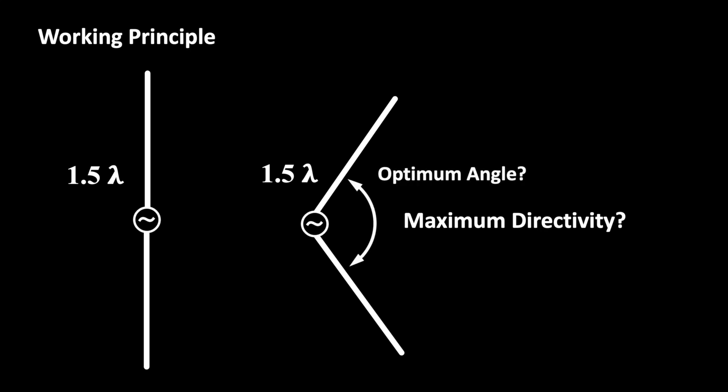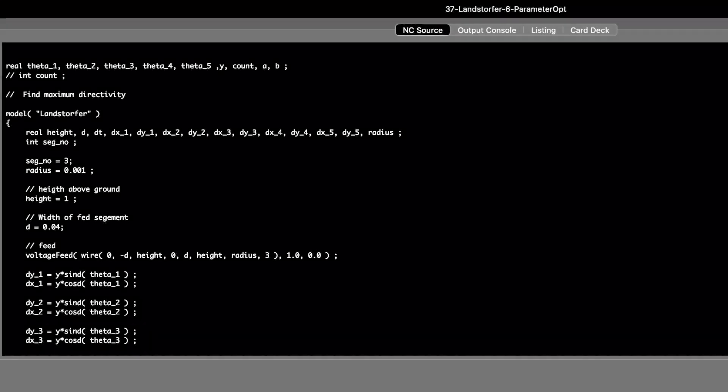Now we are wondering at what pitch angle you would get the maximum directivity. I found a nice way to compute that in the program CocoNec. I used the program several times on the channel to analyze the radiation properties of my loop antennas.